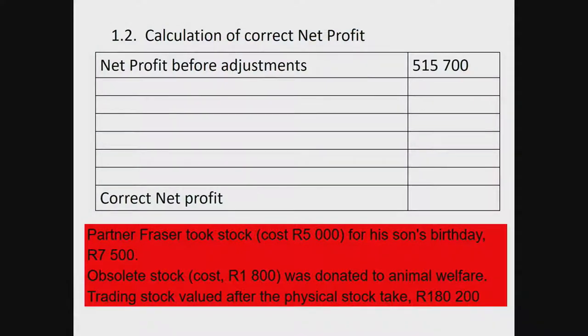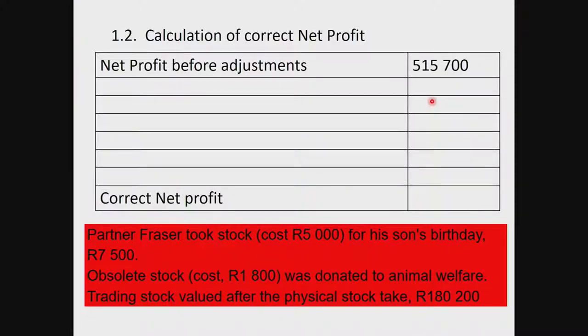In the second block, we look at the information given. They provide a net profit of 515,700, and we must make adjustments — either increasing or decreasing the net profit. Items that increase the net profit are shown without brackets; items that decrease it are shown in brackets or with a minus sign. We start with 515,700 and apply plus or minus adjustments to calculate the correct net profit.